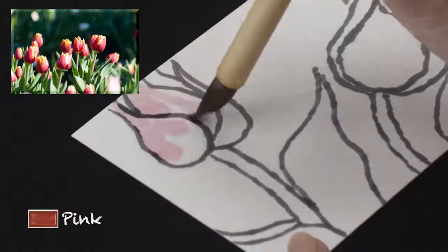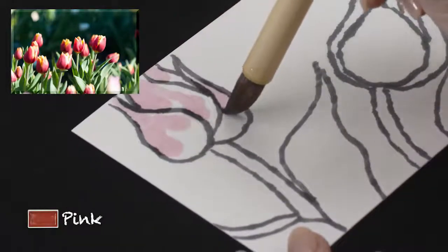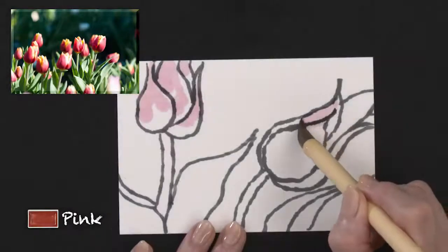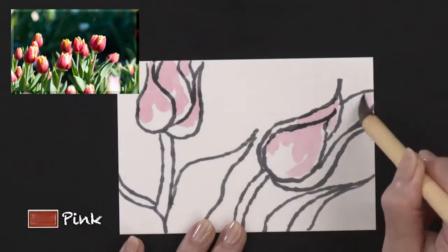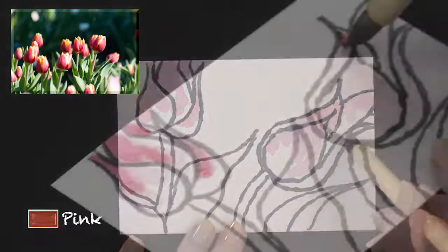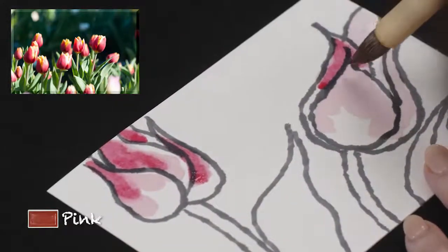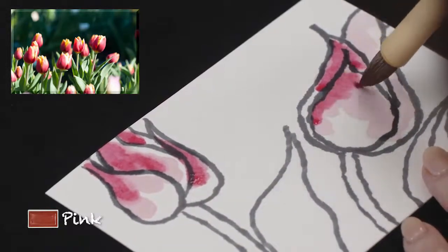With your gradient brush, add some pink to the petals. Color in the petals while leaving some blank space. Then add a bit thicker pink on top.